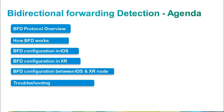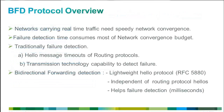In the agenda of this Bi-directional Forwarding Detection protocol session, we will start with BFD protocol overview, how BFD works on Cisco routers, BFD configuration steps between two Cisco IOS routers, between two Cisco IOS XR routers, and between Cisco IOS and XR routers. Finally, we will conclude with troubleshooting steps for BFD protocol issues.